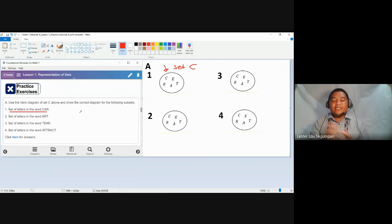Because it contains the elements of the bigger set. So the elements in the set of letters in the word car are C-A-R. Simply write a shape, if you cannot write an oval shape, a regular shape containing the elements C-A-R-Car. This is the representation of the subset, set of letters in the word car, of set C, which is the bigger set, set of letters in the word create.